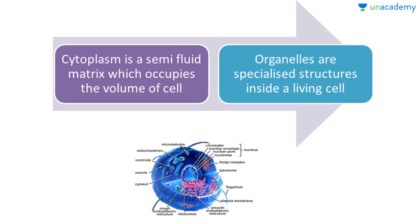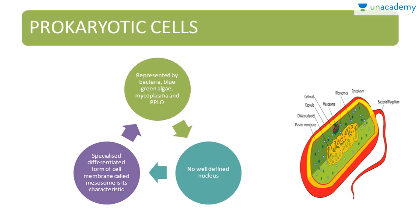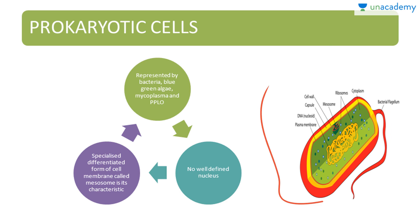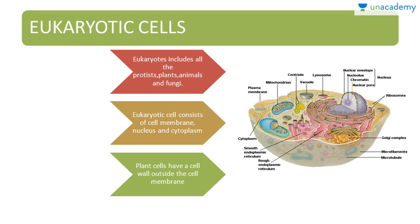Prokaryotic cells are represented by bacteria, blue-green algae, mycoplasma, and PPLO — that is, Pleuro Pneumonia-Like Organisms. They do not have a well-defined nucleus. They have a specialized form of cell membrane called mesosomes, which is a characteristic feature. You can see the mesosome here in this typical prokaryotic cell with no well-defined nucleus.